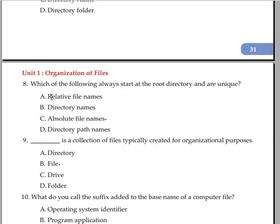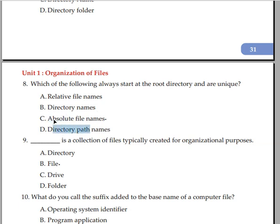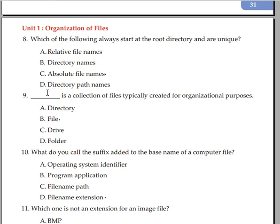Which of the following always starts at the root directory and is unique? Relative file path, directory name, absolute file name. The answer is absolute file path.